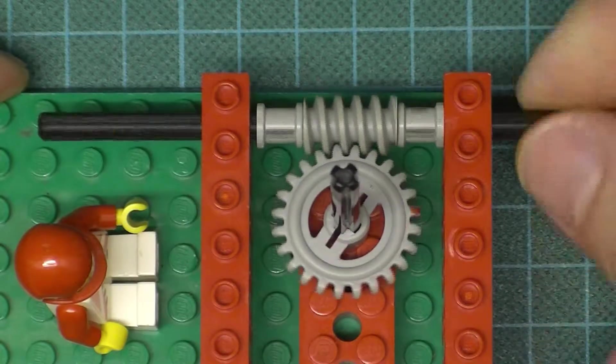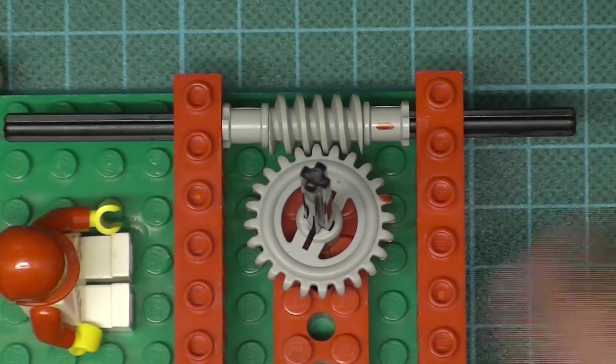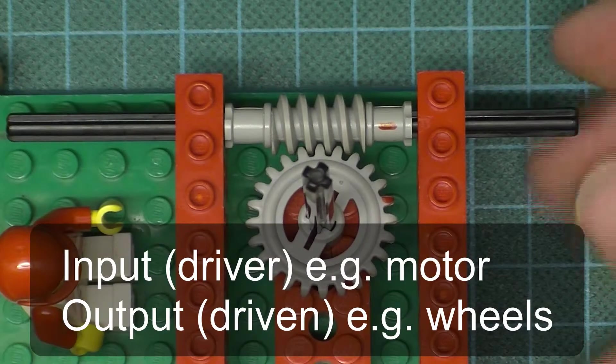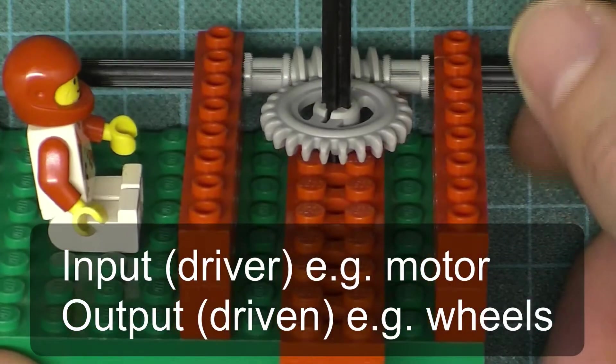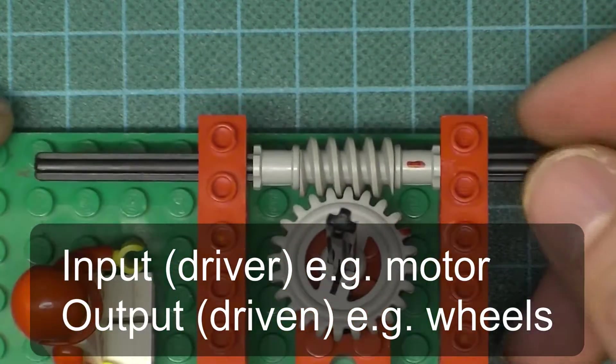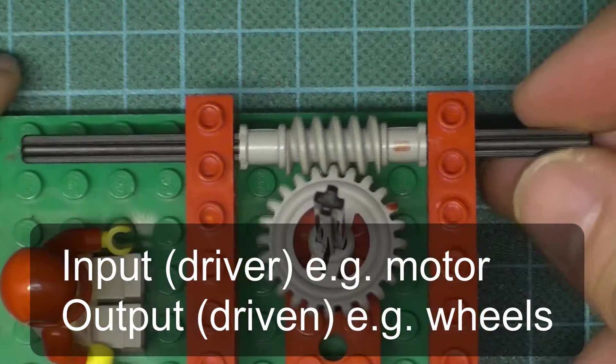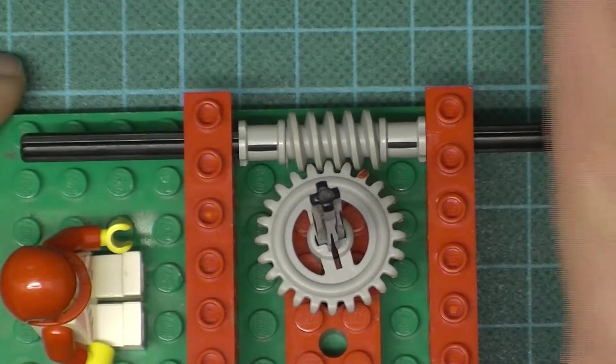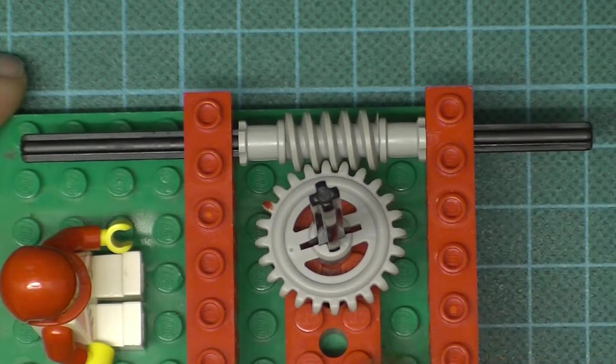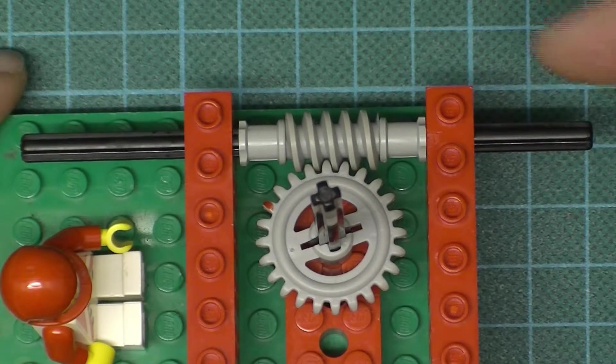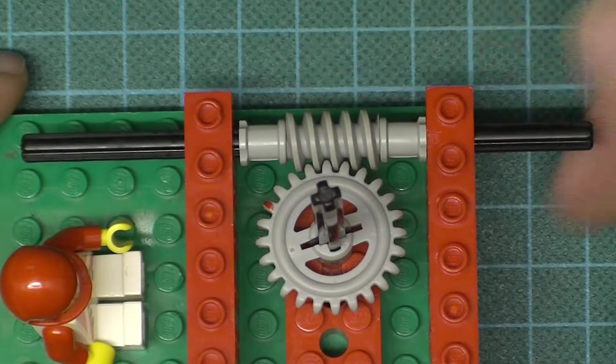So we could regard this as the input and then this is the output. You'll notice that the input is going to be running at 90 degrees to the output. The other thing you'll notice is that the input is turning much faster than the output.